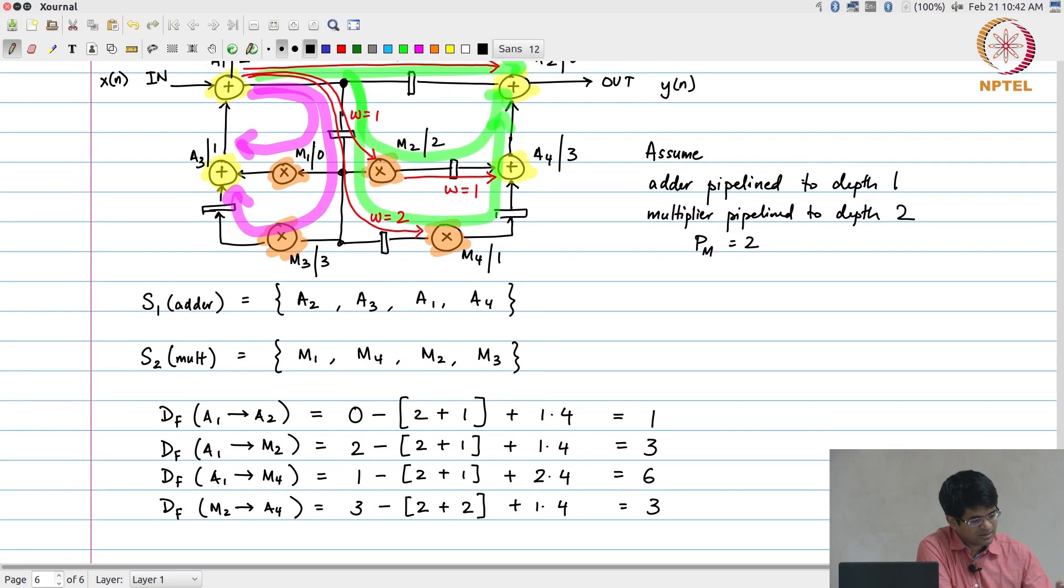In this way, one thing that you can see over here is an example where w is equal to 0. The a3 to a1 edge, df from a3 to a1: when is a1 scheduled? a1 is scheduled at time 2, minus a3 is scheduled at time 1 and it has a pipeline latency of 1 because it is an adder, plus 0 times 4. This is an example where w is 0. In other words, all that we really need to do is work through every single edge in this graph and make sure that the resulting df values are non-negative. They can be 0 or some positive value.